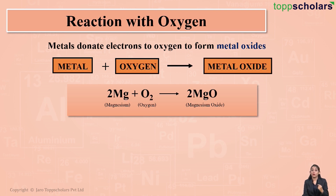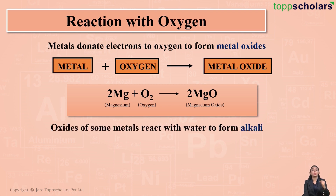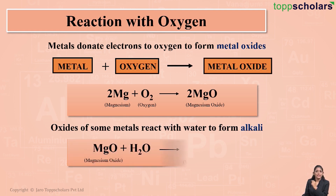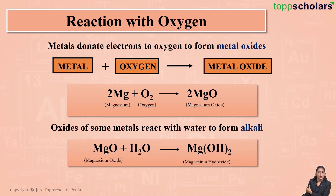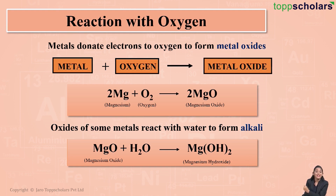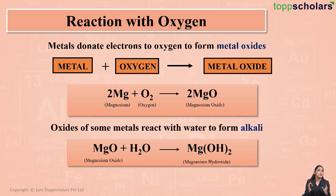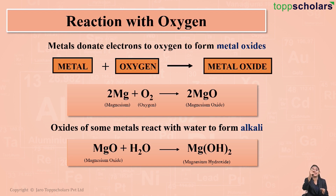When these metal oxides are dissolved in water, they react with water resulting in the formation of an alkali. For example, magnesium oxide, when dissolved in water, reacts with water to form magnesium hydroxide, which is an alkali. Alkalies are bases that are highly soluble in water. So metals react with oxygen to give metal oxides, and when those metal oxides react with water, they give alkalies — that is, metal hydroxides.